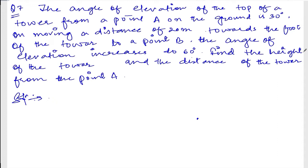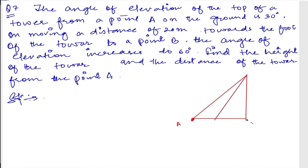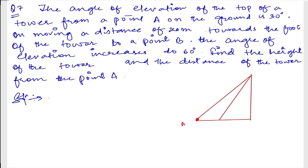So from point A on the ground, the angle of elevation of the top of a tower is 30 degrees. This is the tower. When moving a distance of 20 meters, the angle of elevation increases to 60 degrees. I can join all these points. So this angle here is 30 degrees, this distance is 20 meters, and the angle of elevation here comes out to be 60 degrees.